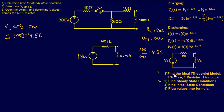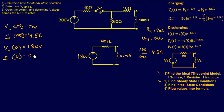For the initial conditions, when you first power on the voltage source the inductor instantly acts as an open. Since there's no current through the resistor, there's no voltage drop across it, so there's 180 volts between points A and B. Therefore VL at time zero is 180 volts. Since the inductor acts as an open, IL at time zero is zero amps.